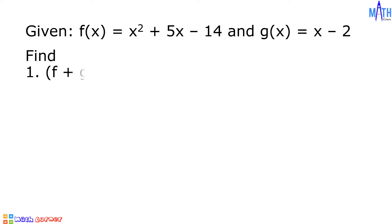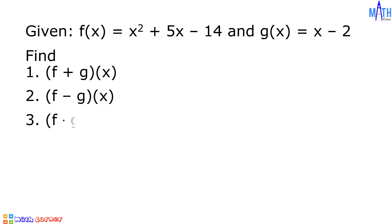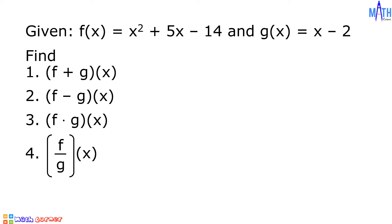Let us find the following. Number 1: quantity f plus g of x. Number 2: quantity f minus g of x. Number 3: quantity f times g of x. And number 4: quantity f over g of x.